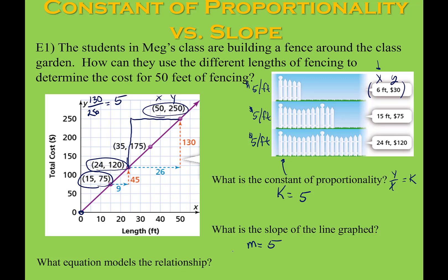So what equation models this relationship? I could use y equals 5x, where x represents the length of the fence and y represents the total cost of purchasing that amount of fence. Notice that looks the same whether I used y equals kx or y equals mx, where m represents the slope.